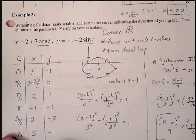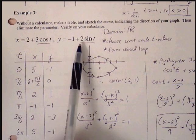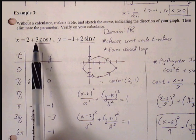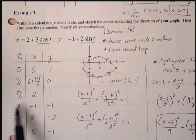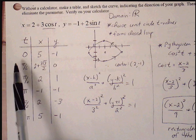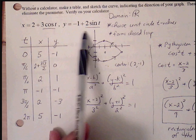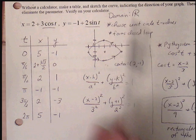Last example. Sketch the curve indicating the direction of our graph. And then eliminate the parameter. So here we can choose some values that fit into our unit circle. These special angles that allow us to find the values easier. We know that there's no restriction with cosine and sine. So domain is all real numbers.